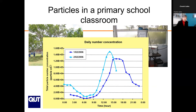We started the monitoring and on the very first two days, this is what came up — a time series of particle number concentrations, otherwise called ultrafine particles, which are a very important pollutant emitted by combustion sources, in particular vehicles. On each of these two days, just after nine o'clock, concentrations of ultrafine particles in the classrooms started increasing to extremely high levels. The question was: what was causing this?